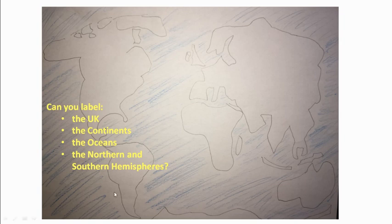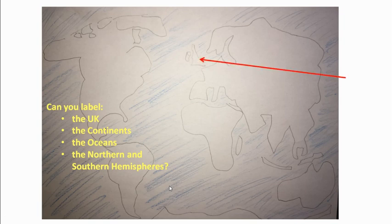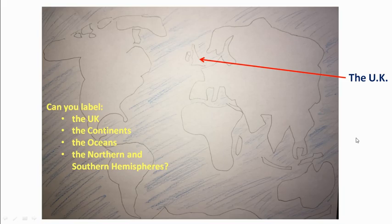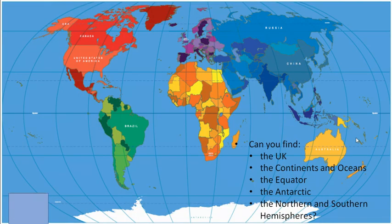These are the things you need to label: the UK, the continents — remember there are seven — the oceans — there are five — and then the Northern and Southern Hemispheres, that's the land above the equator and the land below the equator. The UK where we live is here, and the land is obviously the continents, while the sea is where you'll put the oceans. Pause the video now if you haven't finished task one and don't go any further.